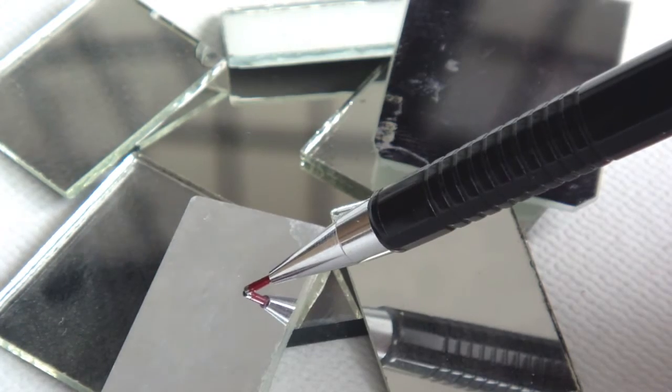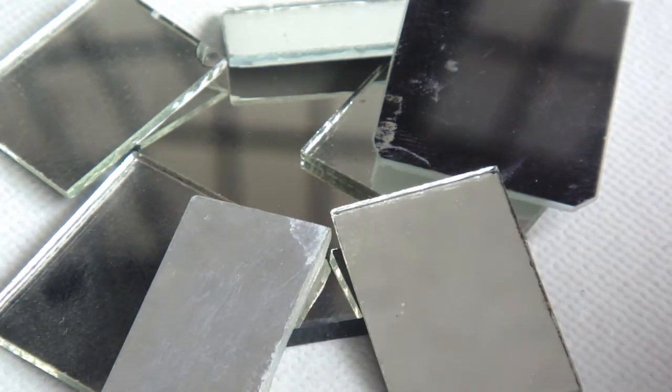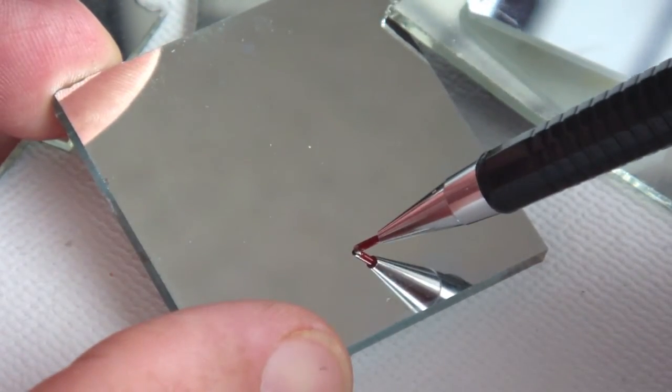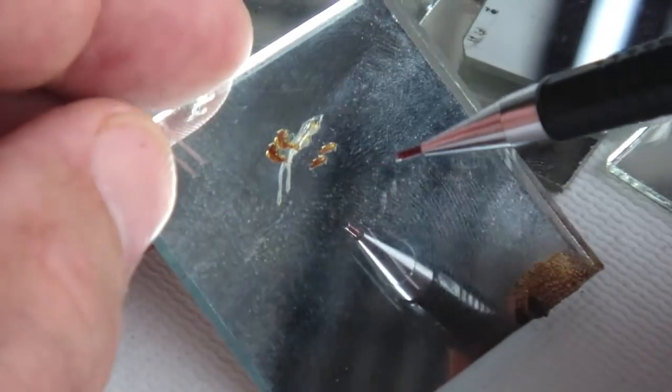By touching the tip of a pencil to the surface of the mirror, you will be able to tell whether the donor mirror has a front or back reflective surface. In this case, we will after a front reflective surface.